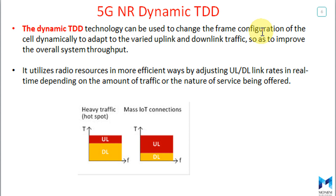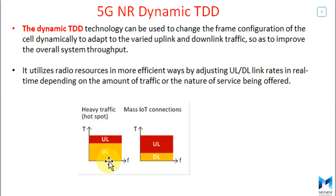5G New Radio utilizes radio resources in a more efficient way by adjusting uplink and downlink ratios in real time, depending on the amount of traffic or the nature of the service being offered. For example, if you have heavy traffic or a hotspot, you may need a higher ratio for downlink. But for a use case like massive IoT, you will need more uplink slots than downlink.